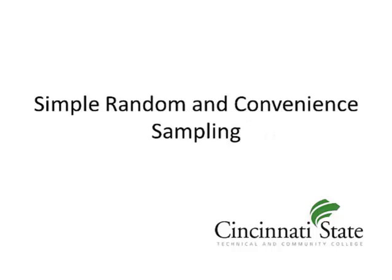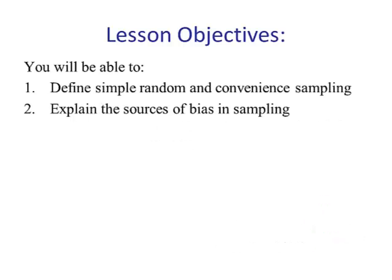Simple Random and Convenience Sampling. This lesson has two objectives: to understand simple random and convenience sampling, and to explain the sources of bias in sampling.